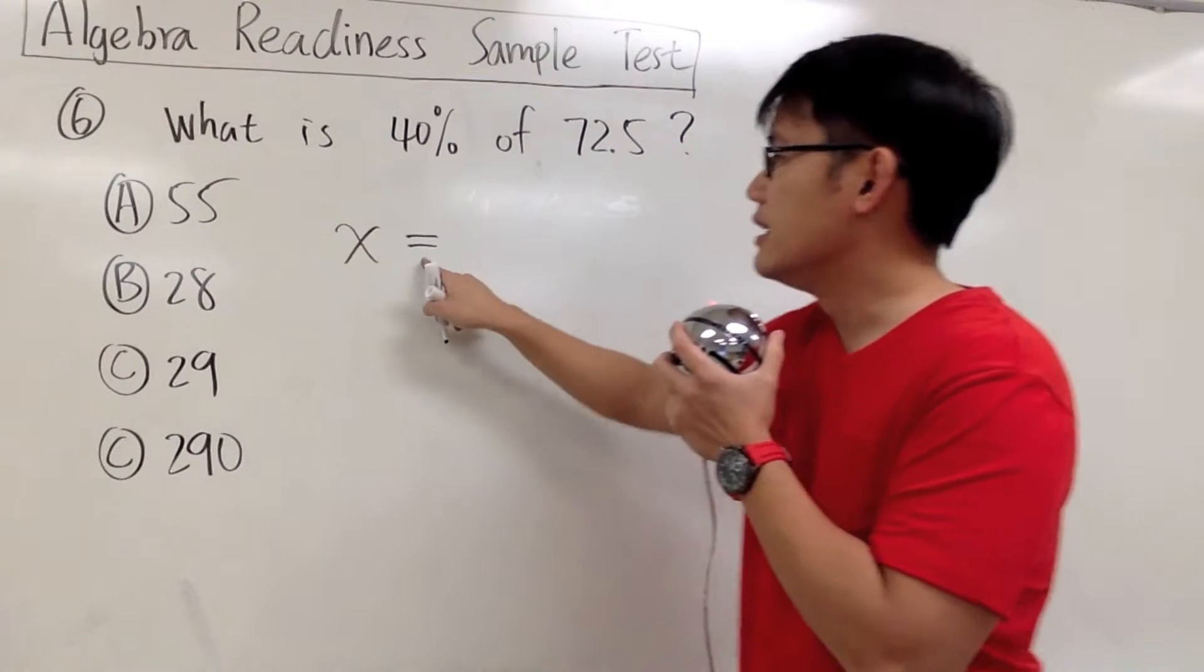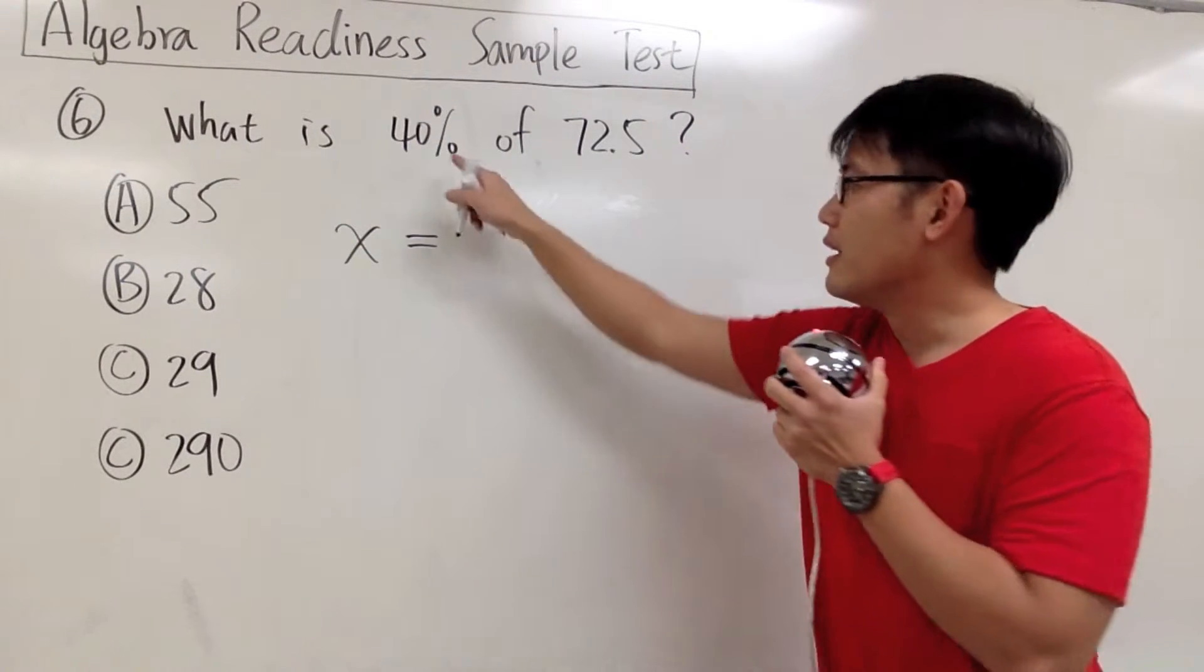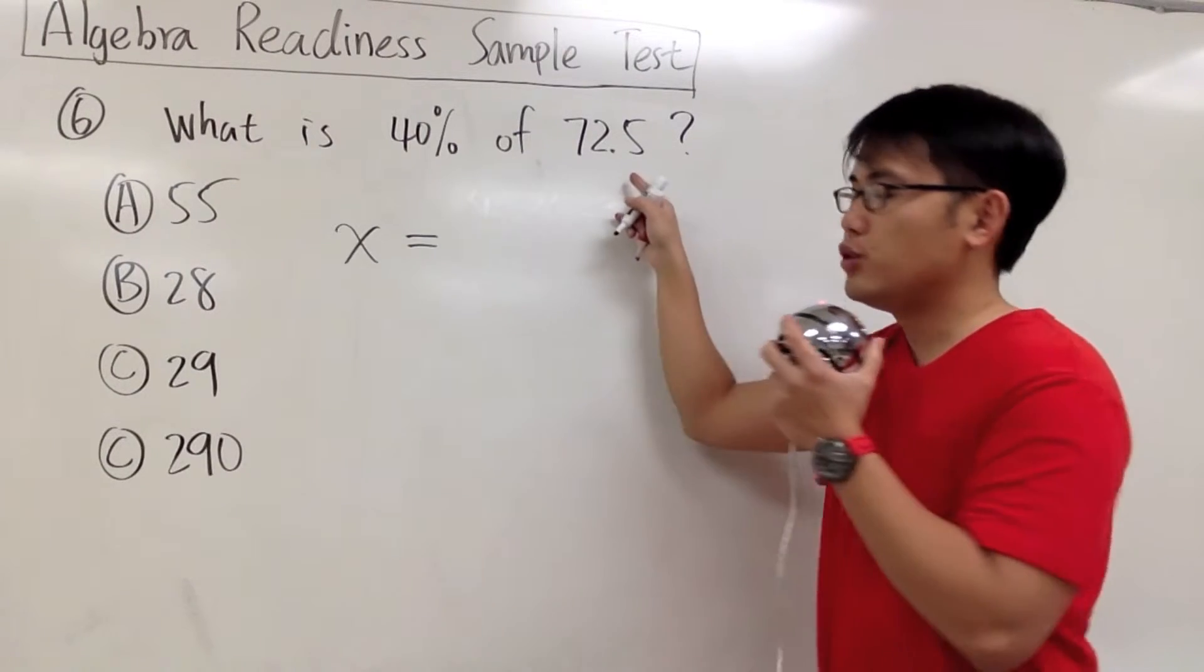because the word 'is' means an equal sign. For the rest, we have 40% of 72.5.